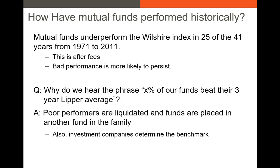For example, if a fund family had 10 mutual funds and five outperformed and five underperformed their Lipper average, the fund family could close the five underperforming funds, move those funds into the outperforming funds, and then claim that 100% of the active funds beat their three-year Lipper average. The choice of benchmark is often left to the discretion of the manager, which allows the manager to pick a benchmark that could have a lower return than the fund itself.